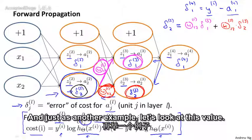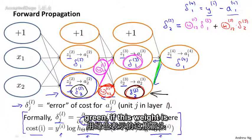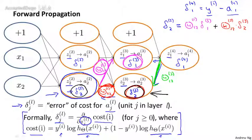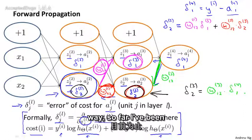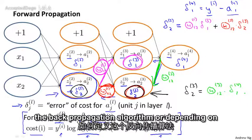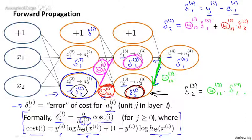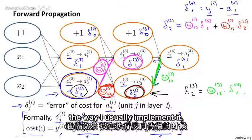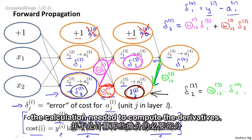As another example, let's look at how delta 3, 2 is computed. If this weight, highlighted in green, is theta 3, 1, 2, then delta 3, 2 equals that green weight times delta 4, 1. Regarding bias units: depending on how you implement backpropagation, you may compute delta values for these bias units as well. The bias units always output plus 1 and we can't change that value. In my usual implementation, I do compute these delta values but then discard them, since they don't end up being part of the calculation needed to compute the derivatives.